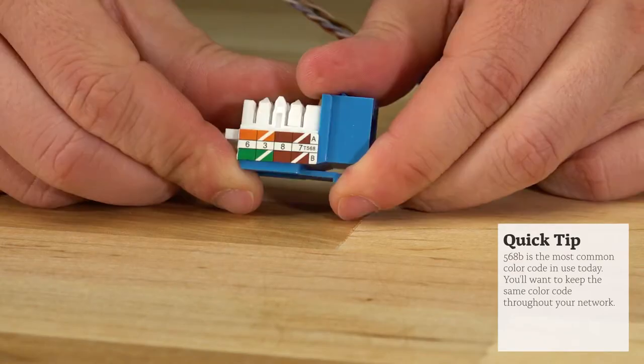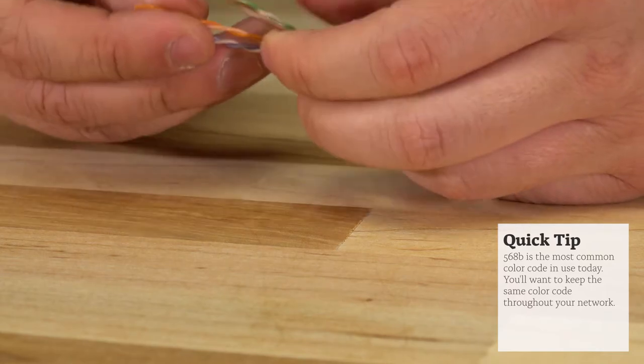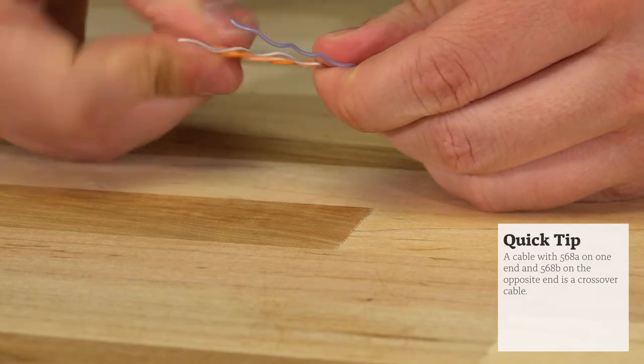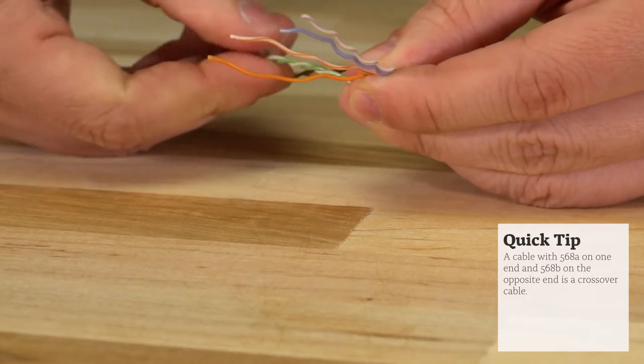Next we'll need to prep the wires by untwisting them and grouping them together based on the color code being used. You'll see that I'm keeping the blue and orange pairs together for one group and the brown and green pairs together for the second group.